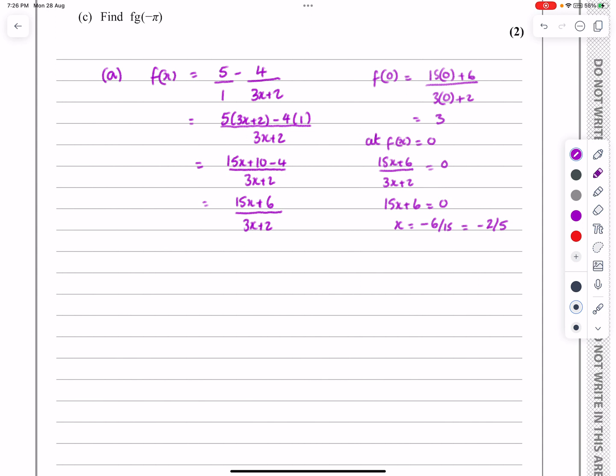This is what I wanted to do, show you how to work out the x and y asymptotes. The x asymptote is nice and easy. I've got 15x plus 6 over 3x plus 2. So 3x plus 2 can't equal 0, so 3x can't equal minus 2, so x can't equal minus 2 thirds.